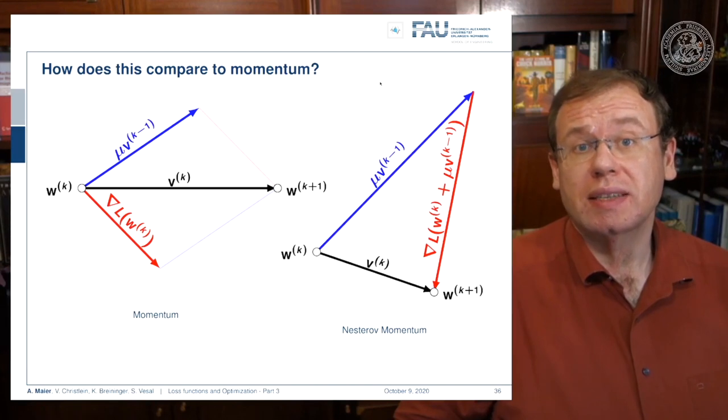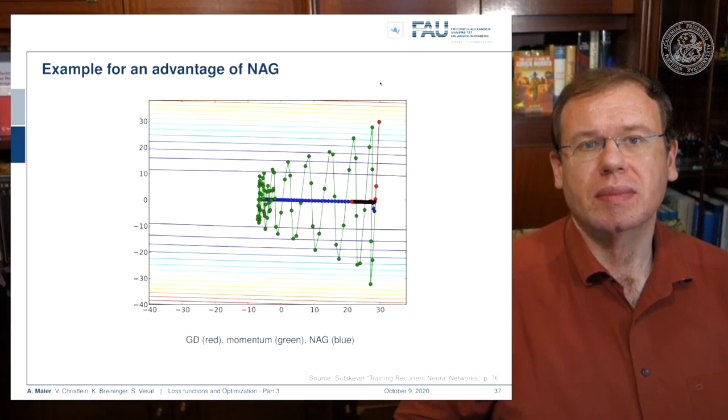Let's visualize this a bit. Here you can see momentum and the Nesterov momentum—of course they both use a kind of momentum term but they use a different direction for calculating the gradient update. That's the main difference. Here you see an example of these momentum terms in comparison.